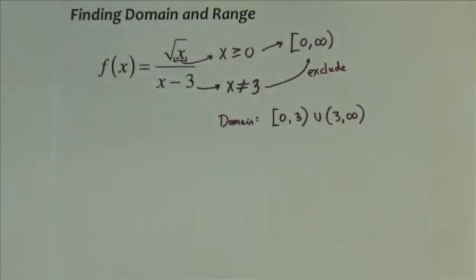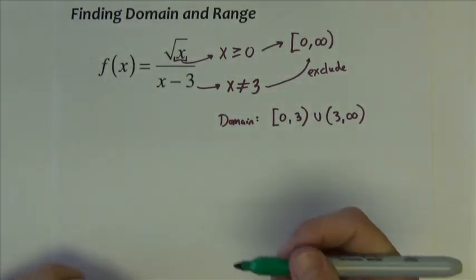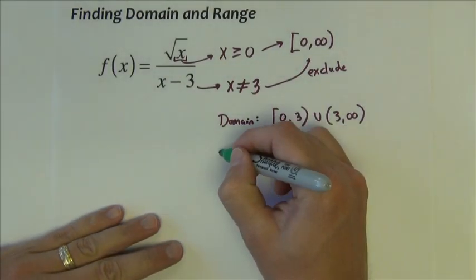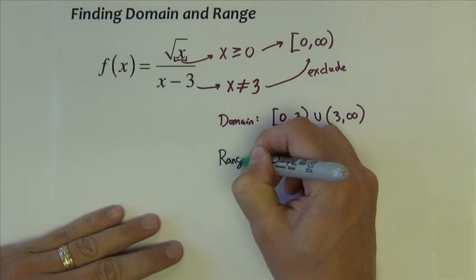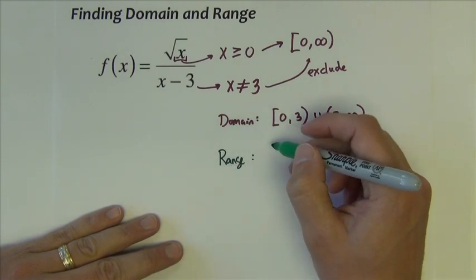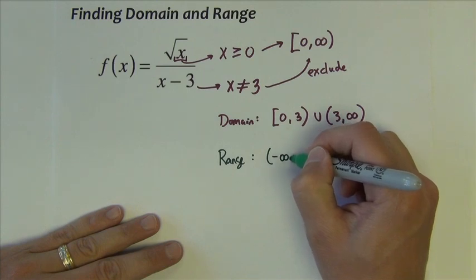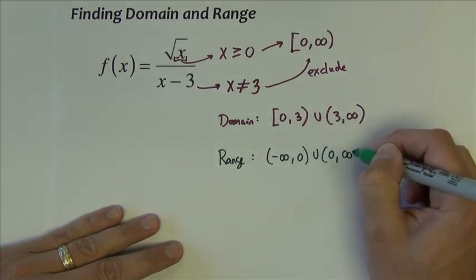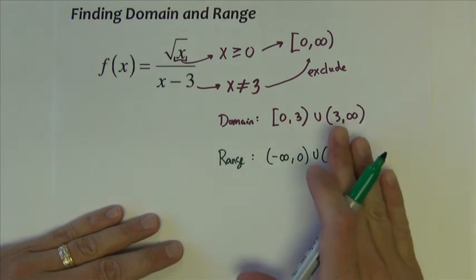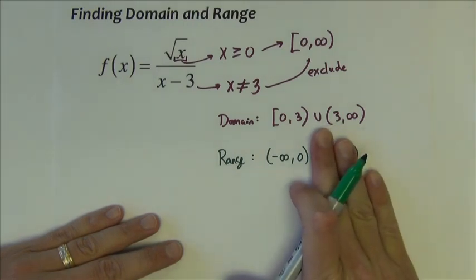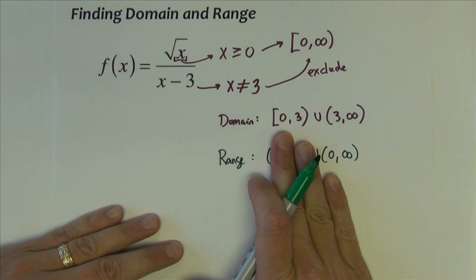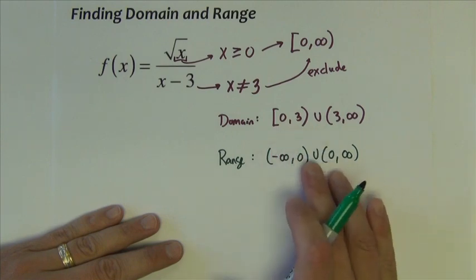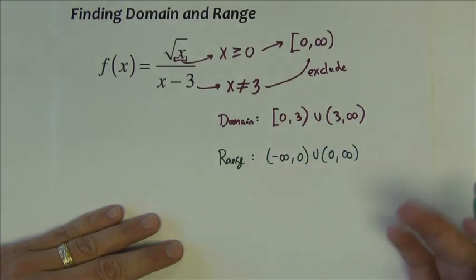So that's how I'm going to write my range is all y values because it went down and it went up. So it's going to be all y values except the zero. So that's going to be negative infinity to zero and zero to positive infinity. In other words, it goes below the x axis, goes above the x axis, but it doesn't ever touch the x axis, it never is zero.